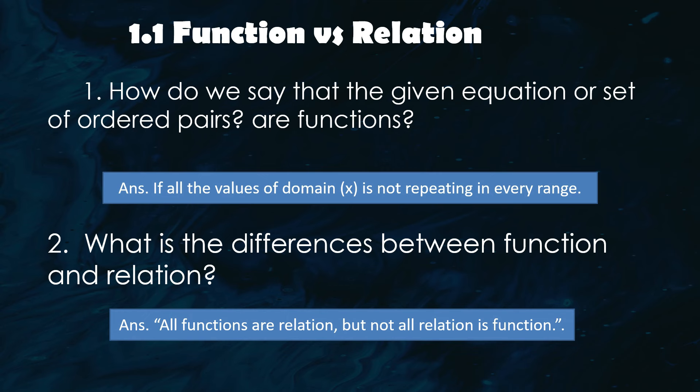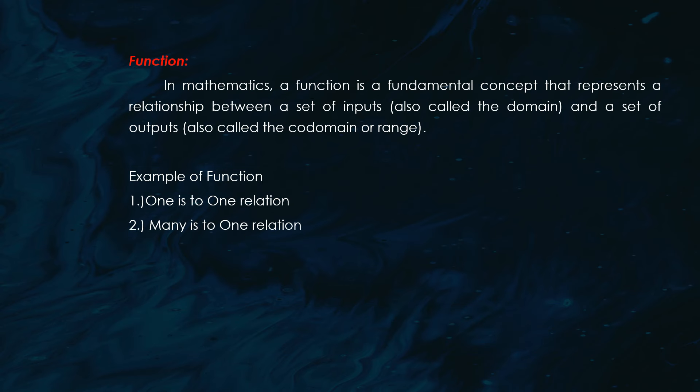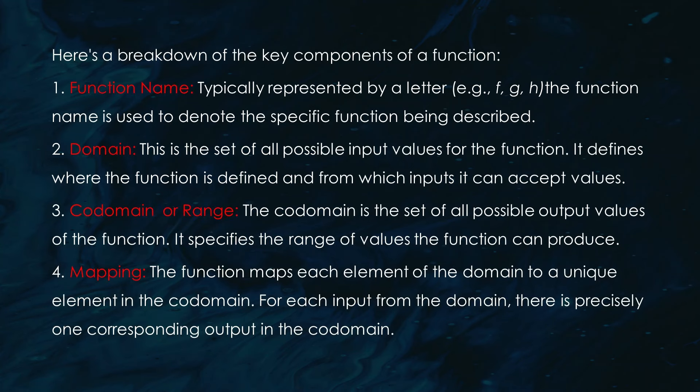Here's an example of a function. Notice how each x value has a unique y value: if x is 1, y could be 2; if x is 2, y could be 4; and so on. This is what we call a one-to-one relation. Another type is a many-to-one relation, where multiple x values can point to the same y value.